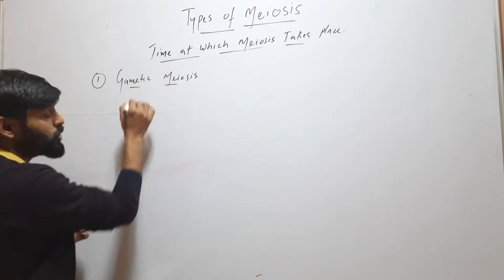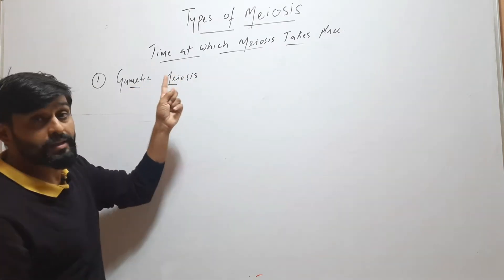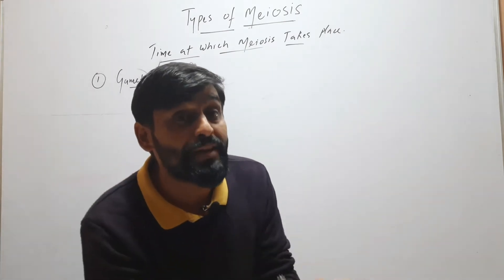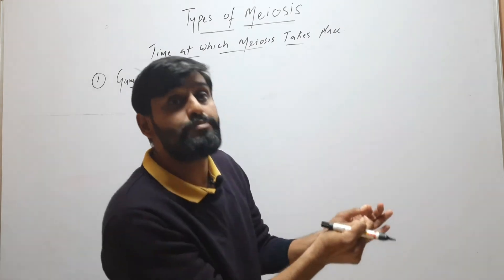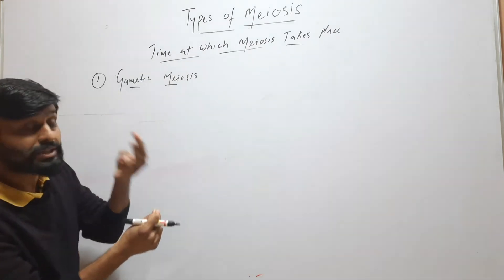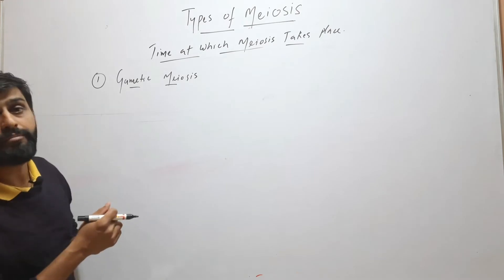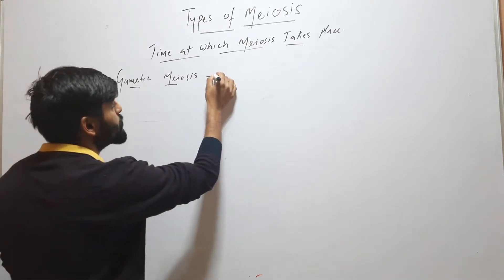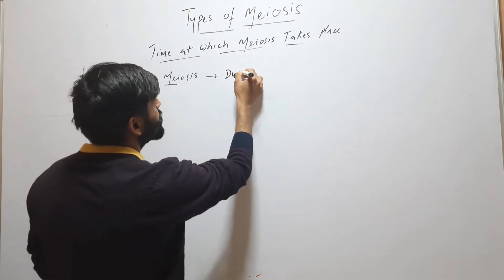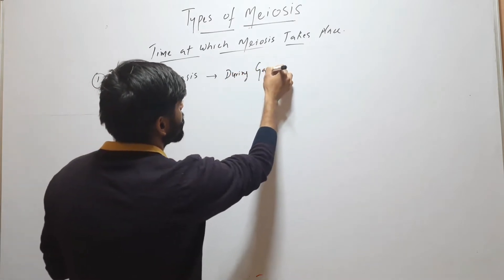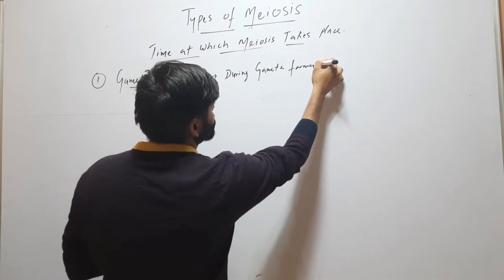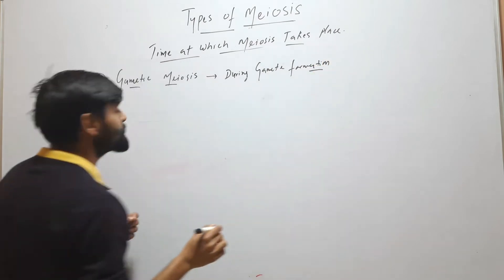These types are classified on the basis of time at which meiosis takes place — at what stage meiosis occurs. On that basis, meiosis is of three types. The first is gametic meiosis. This type of meiosis occurs during gamete formation. Let us understand this with a life cycle.